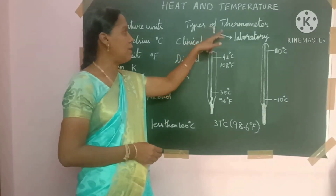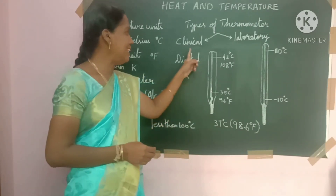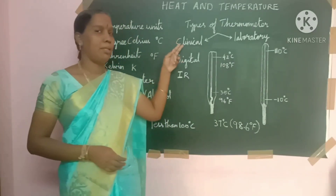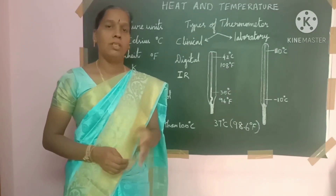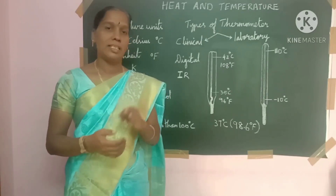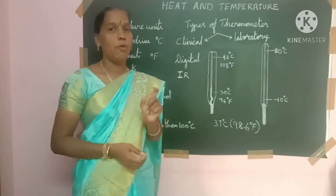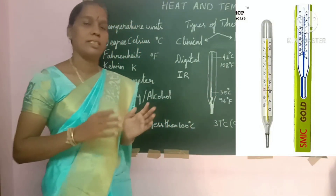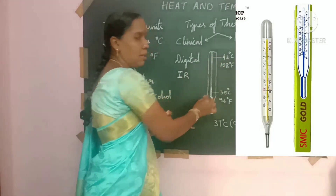Now we are going to see types of thermometers. In our class, we will focus on the clinical and laboratory thermometer. A clinical thermometer, as the name suggests, is used to measure the temperature of the human body — used in clinics and hospitals. It consists of a thin, thick glass tube enclosing a fine capillary tube inside.